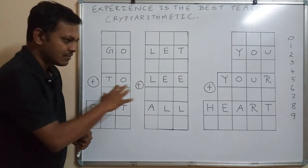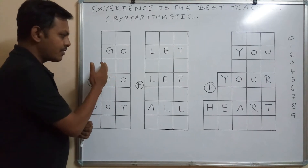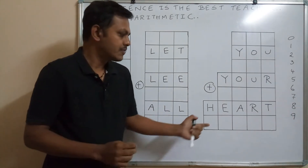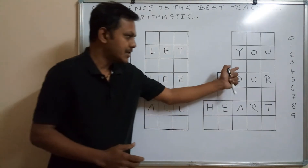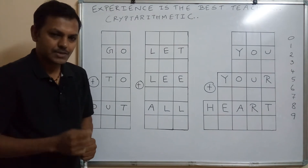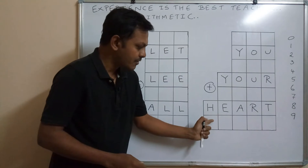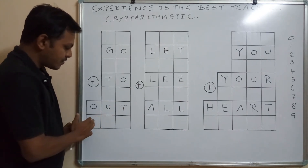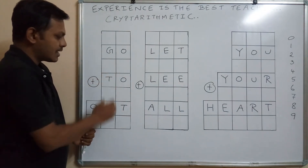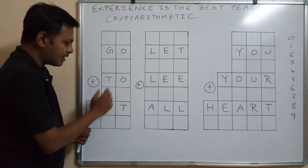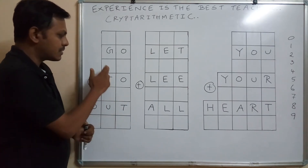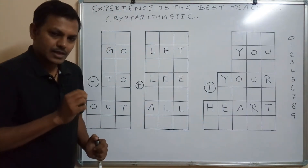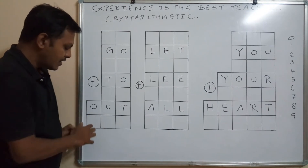We have three different problems: GO + TWO = OUT, LET + ALL = YOU, and YOU + YOUR = HARD. We will start by writing number 1. The reason we start with number 1 is that when adding two-digit numbers, the greatest result is 99 + 99 = 198, and the smallest is 10 + 10 = 20. So the leading digit box can only contain 0 or 1.